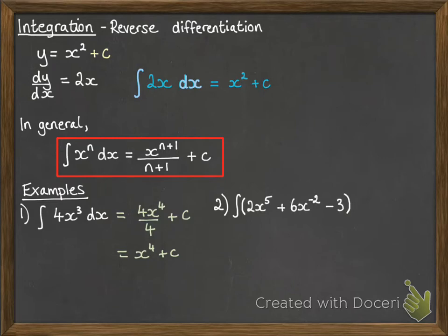Another one. We're integrating this whole thing with respect to x. So we do each term at a time just like you would do if you were differentiating. So 2x to the 5, we raise the power by 1 and divide by the new power. So we get 2x to the 6 over 6. Next we've got 6x to the minus 2. So you've got to be careful with your negatives here just like when you're differentiating. So if we raise minus 2 by 1, we get minus 1 and divide by the new power.